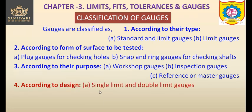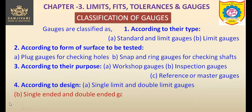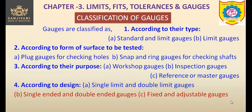According to design, gauges are classified as single-limit and double-limit gauges, single-ended and double-ended gauges, as well as fixed and adjustable gauges. Some gauges may be adjustable — these are not as rigid or robust but can be adjusted. Other gauges are fixed gauges. These are the types and classification of limit gauges. Thank you, my dear friends.